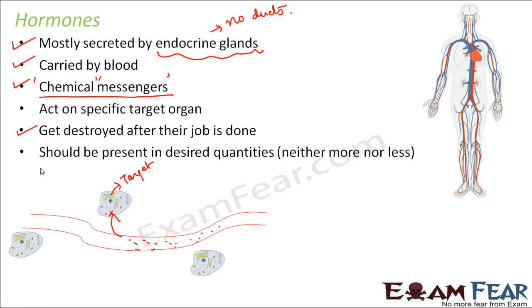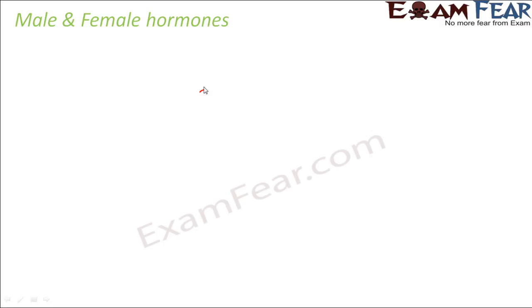Another important thing is that hormones should always be present in the right amount. If present in more than the required amount, it can cause several problems. Similarly, if present in less than the desired amount, that can also cause problems. We will see why it should be in the right amount and what can happen if it is present in more or less amounts. Now, due to the presence of hormones in males and females, different traits start appearing during adolescence.